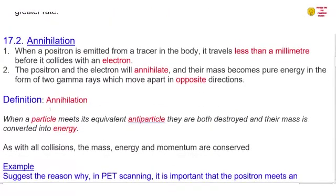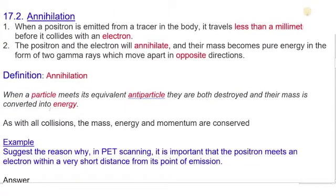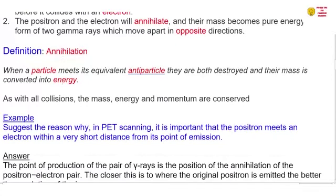Now we're going to talk about annihilation. When a positron is emitted from a tracer in the body, it travels less than a millimeter before it collides with an electron. The positron and the electron will annihilate, and their mass becomes pure energy in the form of two gamma rays, which move apart in opposite directions. Definition of annihilation. This is when a particle meets its equivalent antiparticle, and they both get destroyed. Their mass is converted into energy.